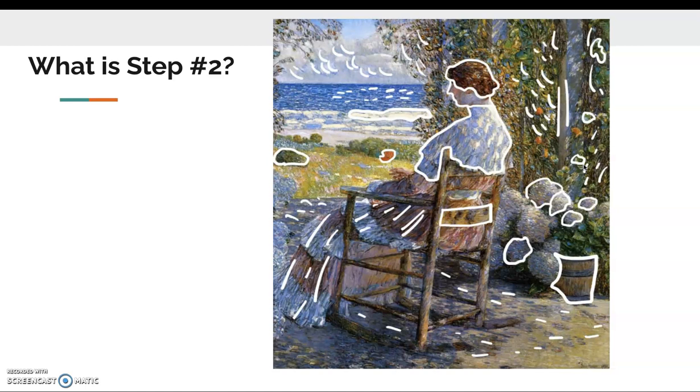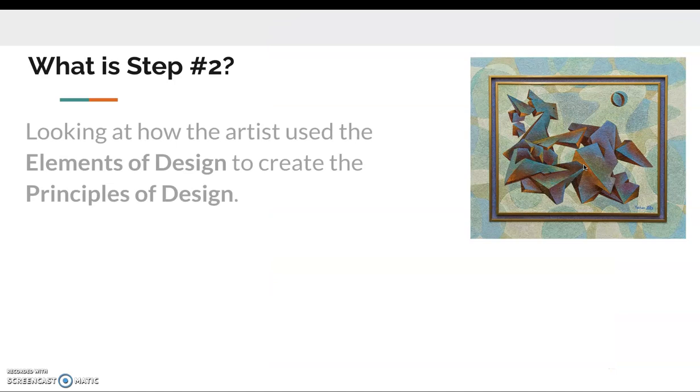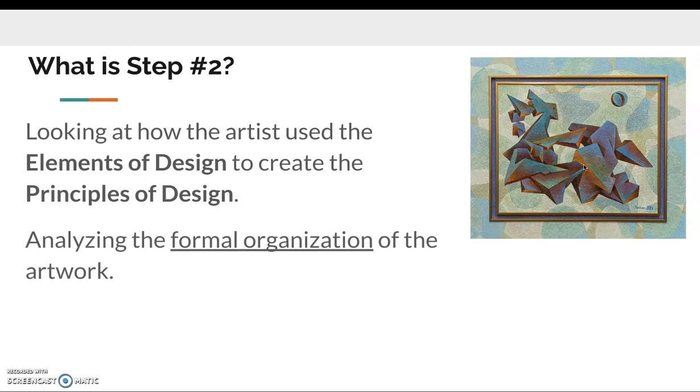Step number two is looking at how the elements and principles of design are being used in artwork. We're looking at how the artist uses the elements of design to create the principles of design because you need them to work together. You can talk about them separately, but when we talk about the principles of design we usually mention the elements of design. Really what we're doing is analyzing the formal organization of the artwork.